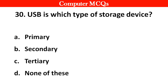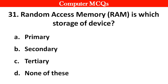Next question. USB is which type of storage device? Options A: Primary, B: Secondary, C: Tertiary, D: None of these. Right answer is option A: Primary.